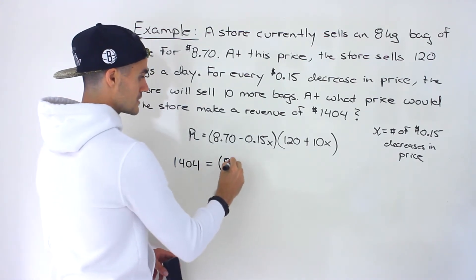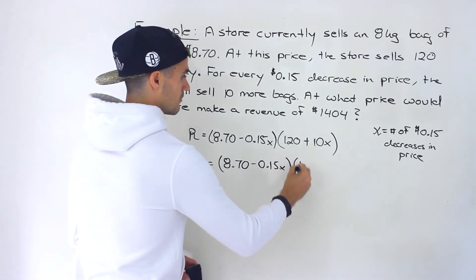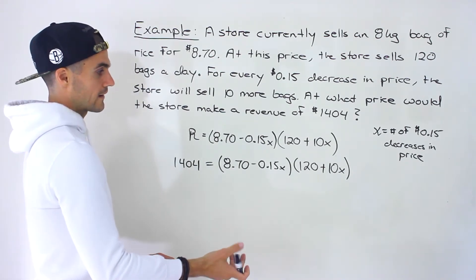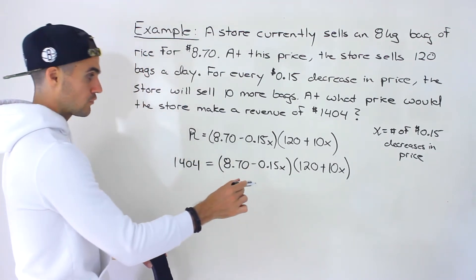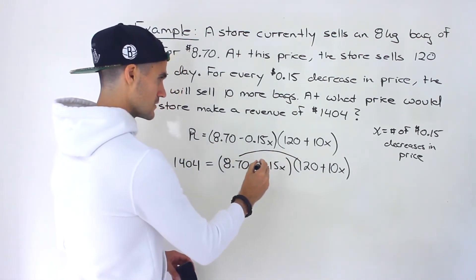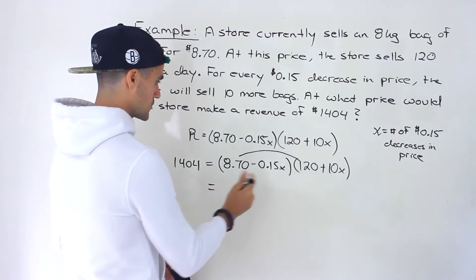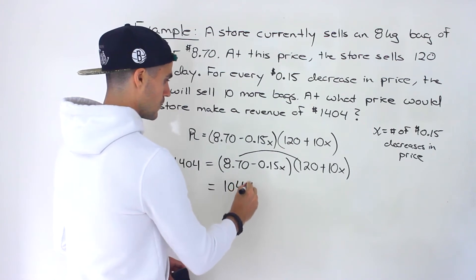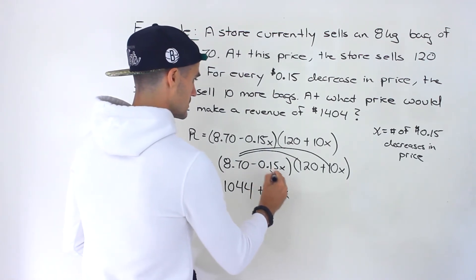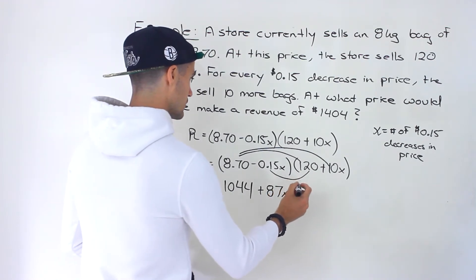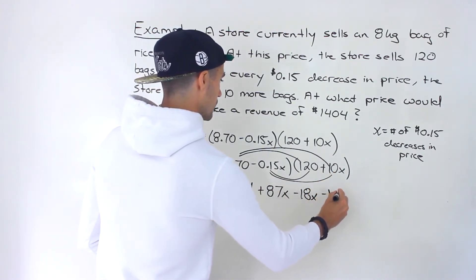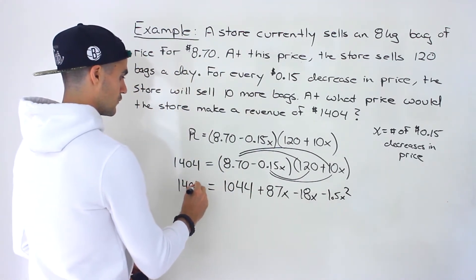So here, this right side is going to stay the same, and basically what we got to do is just solve this equation. We have to solve for x. So what we're going to do is expand this whole side, bring this over, it's going to end up being a quadratic equation. So expanding everything, let's do this in steps. There's some decimals here, so let's just be careful with our algebra. 8.70 times 120 would give us 1,044. 8.70 times 10x would give us 87x. Negative 0.15x times 120 would give us negative 18x. And then this times this would give us negative 1.5x squared. Then we got the 1,404 over here.